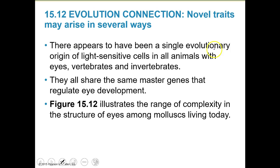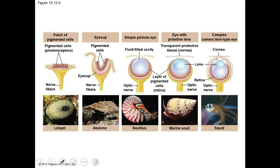There appears to have been a single evolutionary origin of light-sensitive cells in all animals with eyes - vertebrates and invertebrates. They all share the same master genes that regulate eye development. Looking at the figure: the simplest forms just have some cells that can receive light. An abalone has an eye cup. Nautilus has a small pinhole with a fluid-filled cavity. A small snail develops a lens like what we have. And by the time you get to the squid, there's a cornea, a lens, and a retina - a whole complex system that works well.